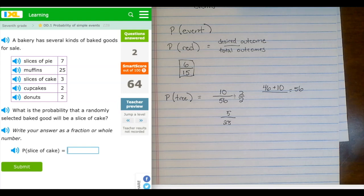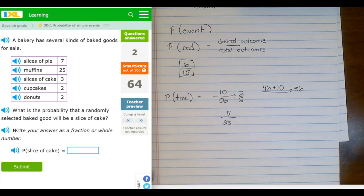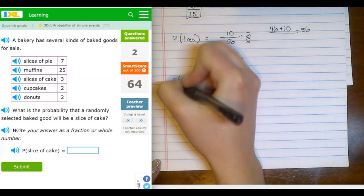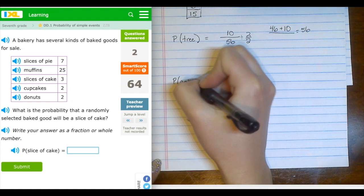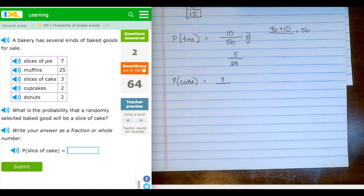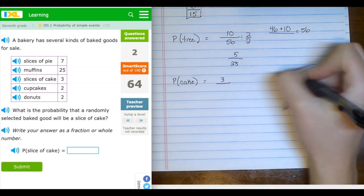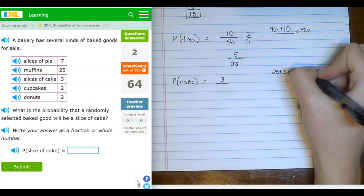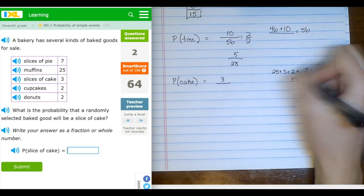We have one now with a table, and I like the idea of reading a table. So if I have several kinds of baked goods for sale: 7 slices of pie, 25 muffins, 3 slices of cake, 2 cupcakes, and 2 donuts, we're looking at the probability that a randomly selected baked good will be a slice of cake. So we have the slice of cake, which will go on top of this probability for cake. So the probability of picking cake will be 3 on the top of the fraction, and then the bottom of the fraction is just an addition problem to add all of the types of food together. So if I add that 25, 3, 2, 7, and 2, I'm going to get 39 on the bottom of that fraction.